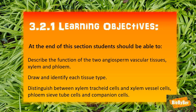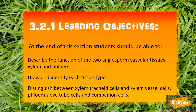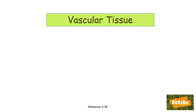What does this mean? What are we actually trying to learn? You need to be able to describe the function of vascular or transport tissue in a flowering plant or angiosperm, draw and identify each tissue type, and distinguish between xylem tracheid cells and xylem vessel cells, and between phloem sieve tube cells and companion cells.